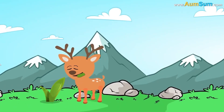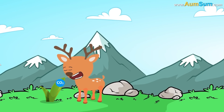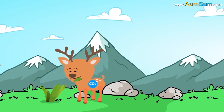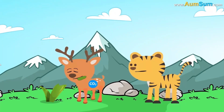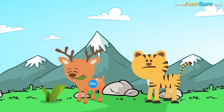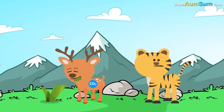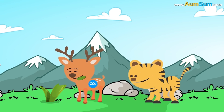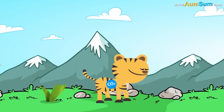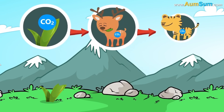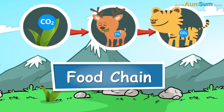When animals eat plants, the carbon content in the plants is transferred to them. Some animals like lions and tigers do not eat plants, but they do eat the plant-eating animals. When that happens, the carbon content enters their bodies as well. In this way, carbon enters all of us through the food chain.